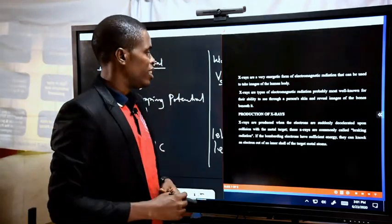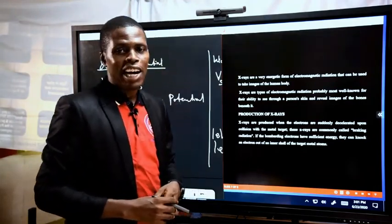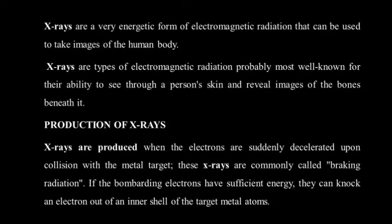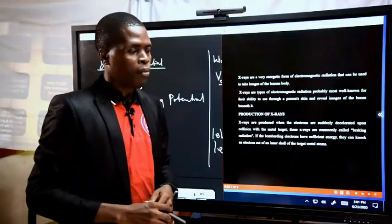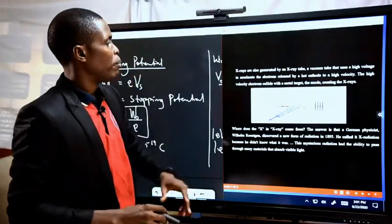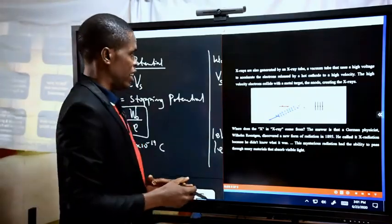Most of the scientists who did research in X-rays were afflicted with cancer because they were not aware of the dangerous effect of X-rays. X-rays are produced when electrons are suddenly decelerated upon collision with a metal target. These X-rays are commonly called braking radiation. If the bombarding electrons have sufficient energy, they can knock an electron out of an inner shell of the target metal atoms.